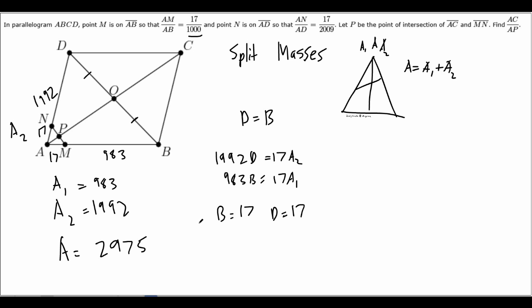We want to find AC over AP. To do this, let's first write down the equation: 2975 times AP. The interesting part is, you notice that this weight, this weight right here, O is the sum of these two weights. So O is 34. You got 2975 times AP is equal to 34 times PO.